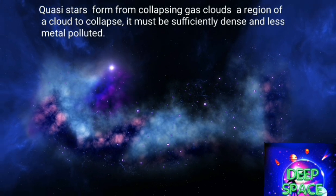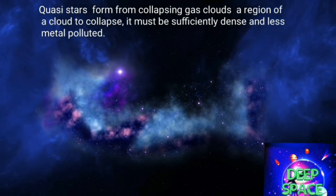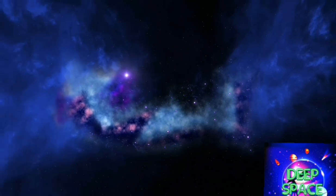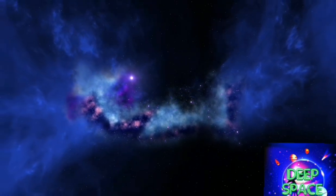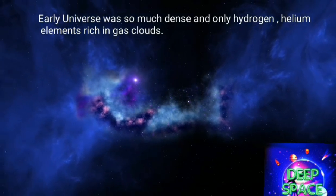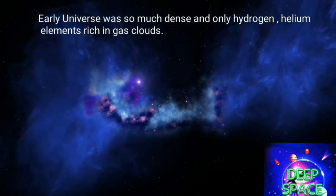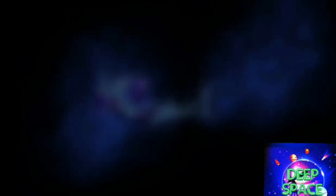A quasistar-mass protostar can only be built in the early universe from light elements. If the gas cloud is polluted with heavier elements, then it can cool more readily and radiate energy. This cooling allows a large cloud to fragment into much smaller pieces, so that in the present-day universe, the collapse of such a large cloud would not lead to one massive protostar.